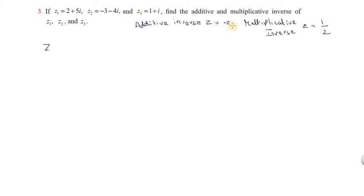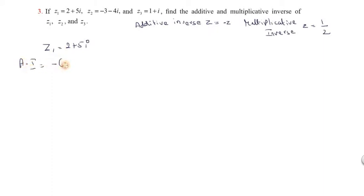For Z1, the additive inverse can be figured out. The additive inverse is z equal to minus z, so the minus is multiplied by the total. For Z1 equal to 2 plus 5i, the additive inverse is equal to minus 2 minus 5i. This is the additive inverse.